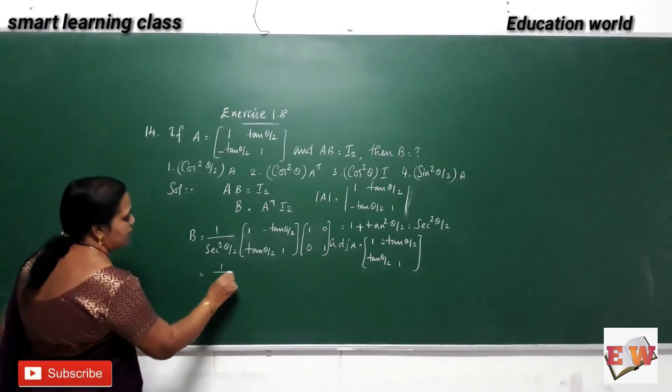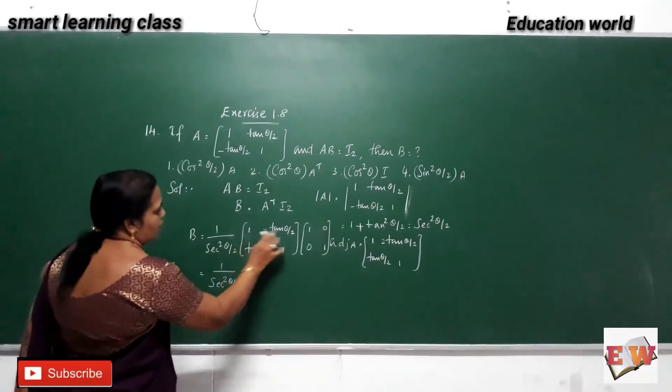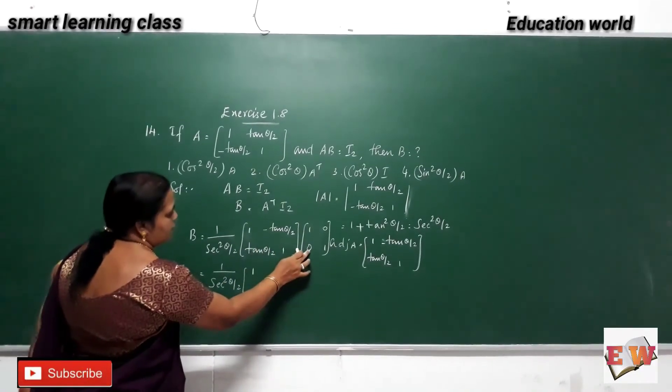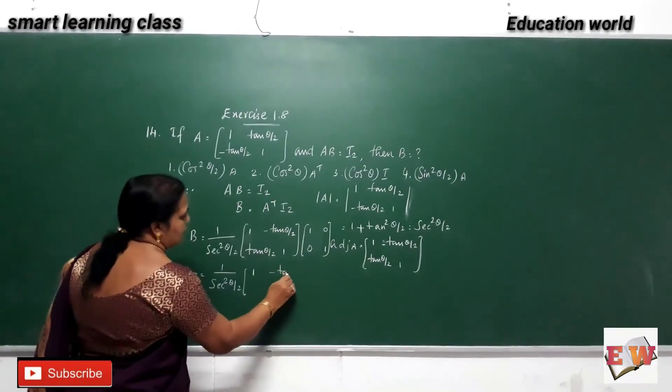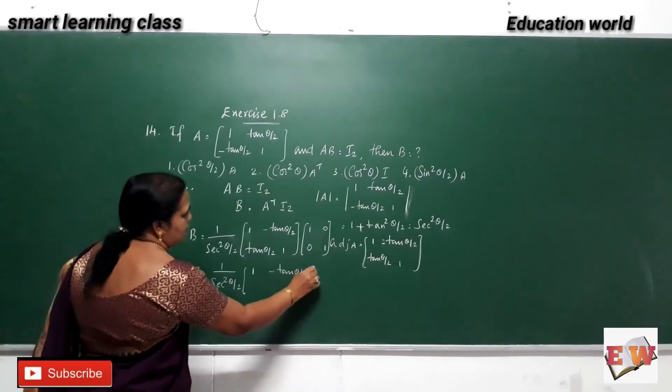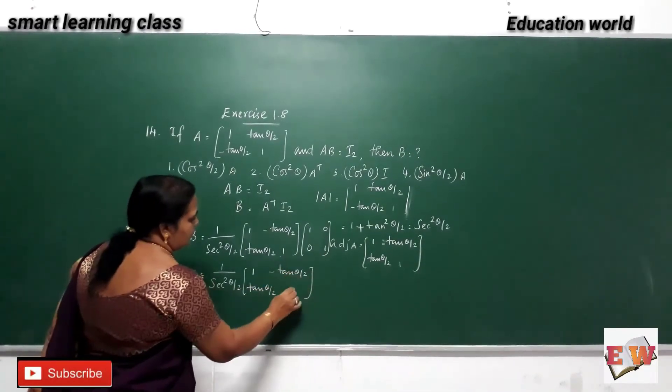Just multiply that 1. 1 into 1, 1. This tan theta by 2 is equal to minus tan theta by 2. Here plus tan theta by 2. Here 1 into 1.